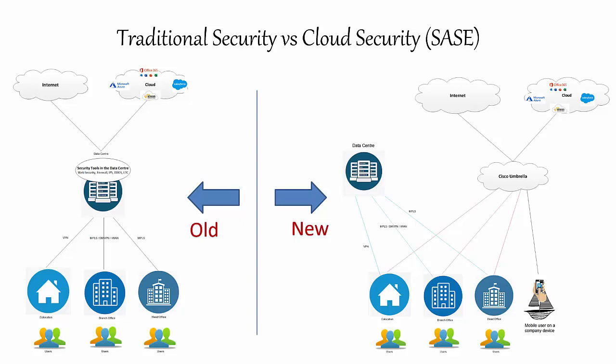This new architecture works for absolutely any user regardless of where they connect from — co-location, branch office, head office, or even a mobile user on a company device sitting on his boat.